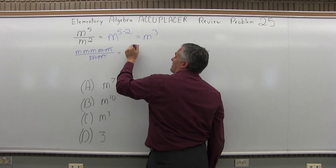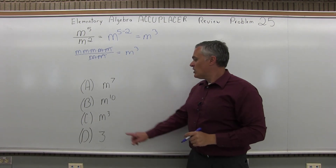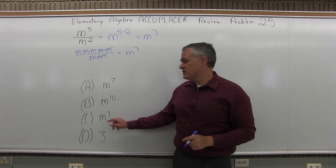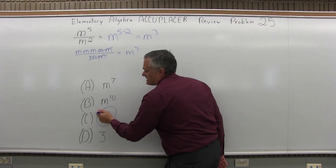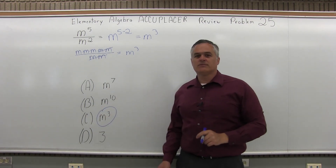If I look at my list of options, option C is an exact match. So the answer to Problem 25 is option C, m to the third power.